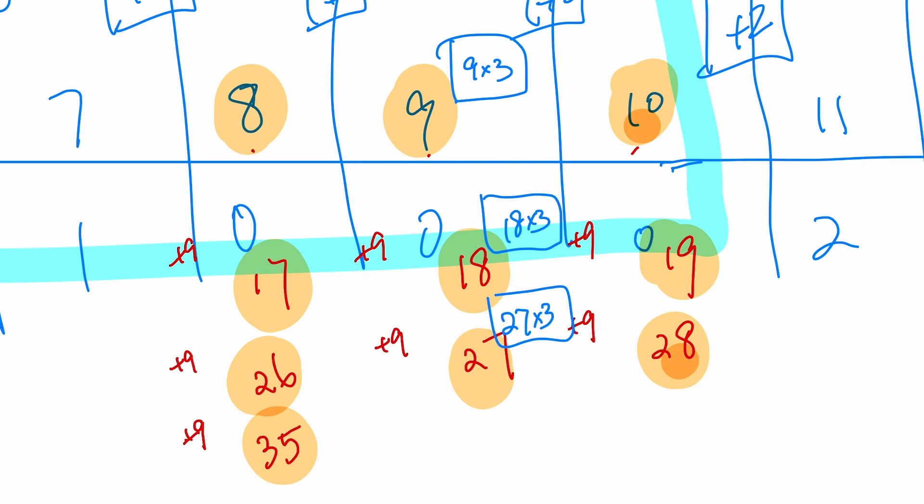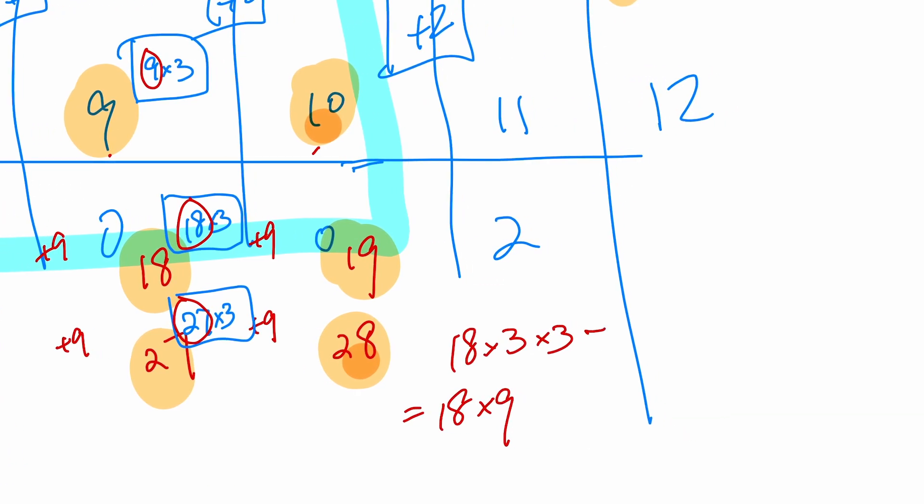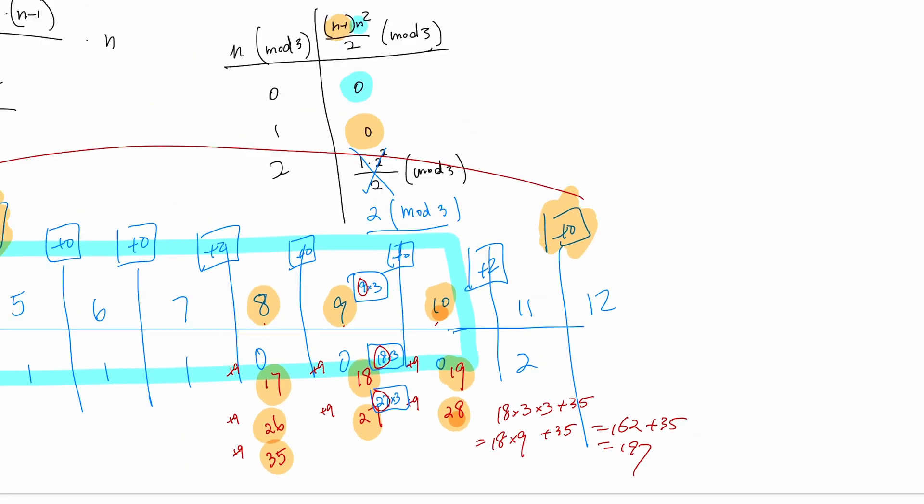Now, 9, 18, 27, once again makes an arithmetic series. So we do 18 times 3 times 3, which gives us 18 times 9. Don't forget to add the 35 at the end. We get 162 + 35, which results in 197.